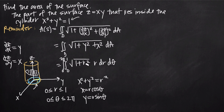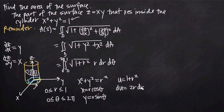We'll use u-substitution to evaluate this integral. We have r squared and r to the first power — since those are one degree apart, we set u equal to 1 plus r squared. Taking the derivative, the 1 disappears and we get du equals 2r dr. We can solve for r dr: dividing both sides by 2 gives us r dr equals du over 2. We can substitute du over 2 directly for r dr in our integral.